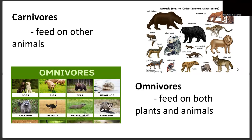Carnivores feed on other animals. Examples include weasel, bear, black bear, cheetah, mountain lion, timber wolf, and many more. Omnivores feed on both plants and animals, such as dogs, pigs, bear, hedgehog, raccoon, ostrich, groundhog, opossum, and also including us humans.